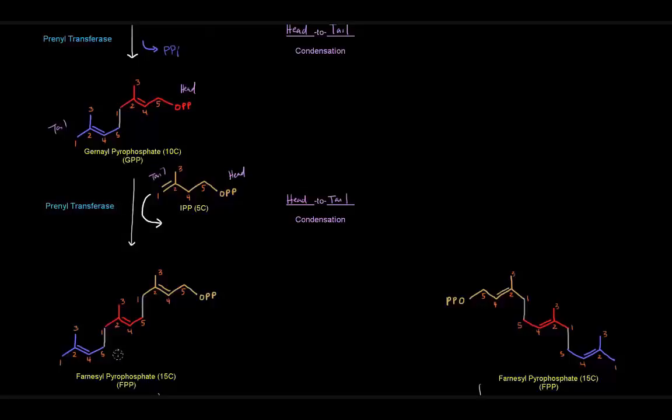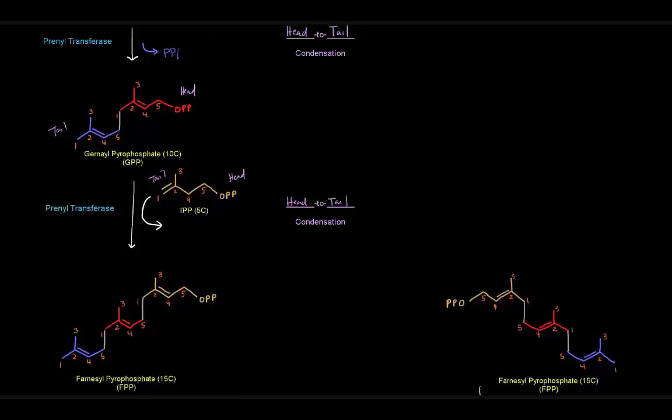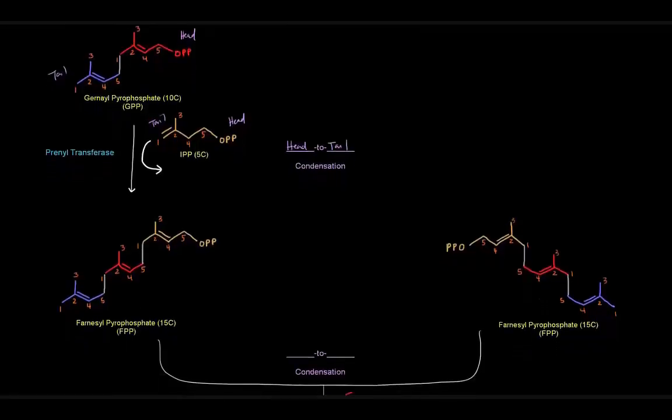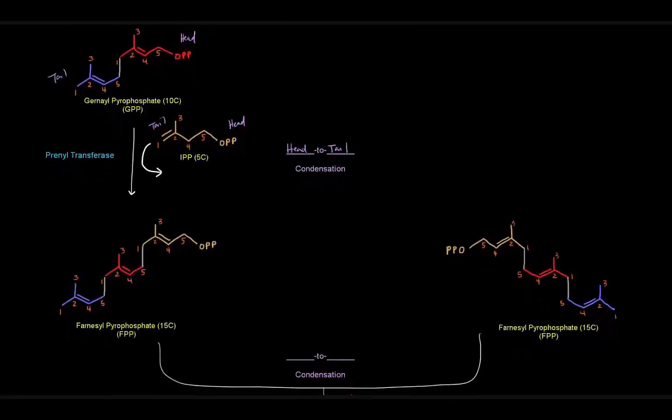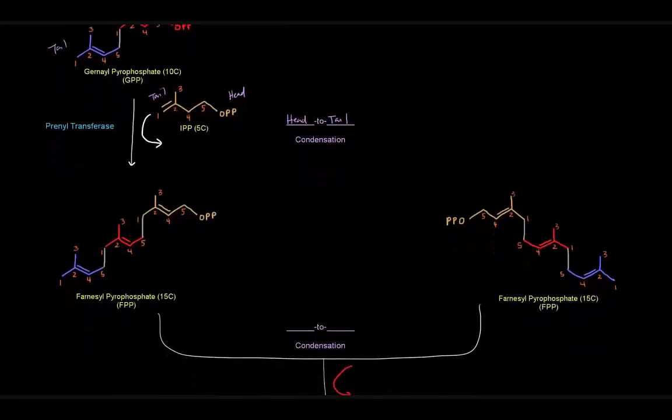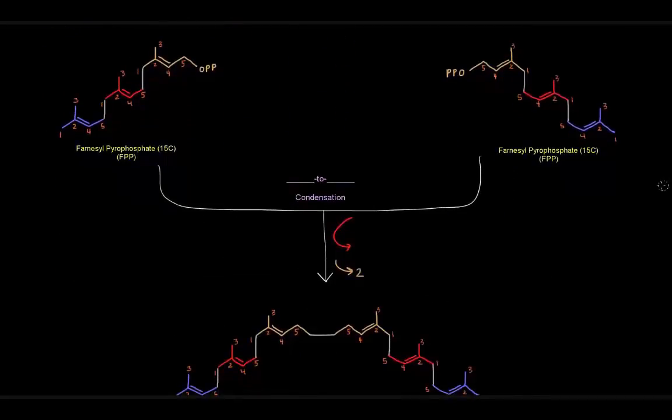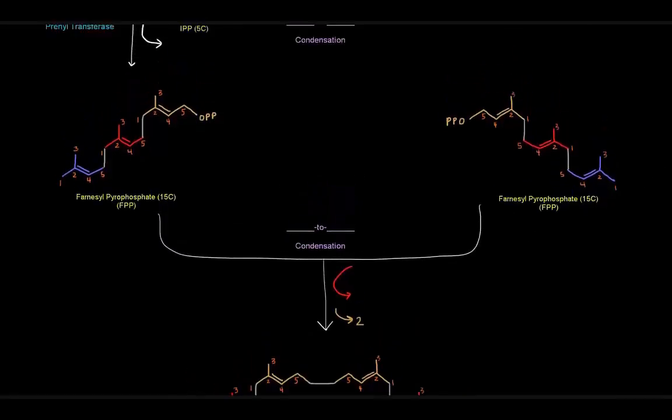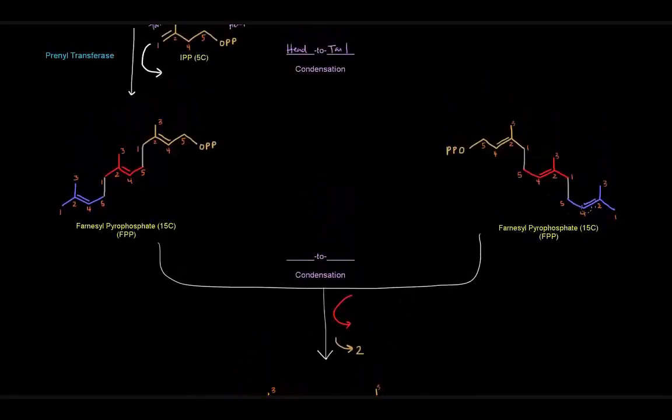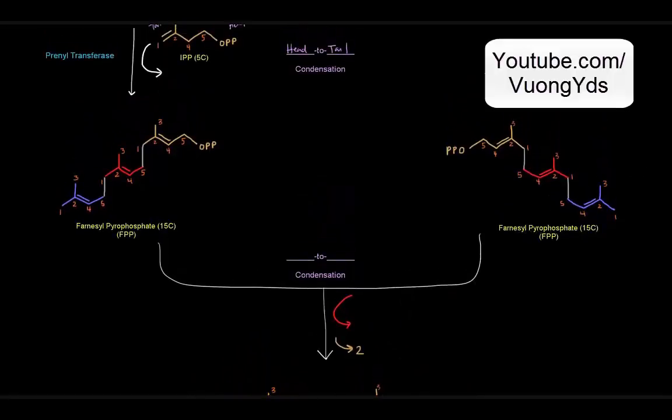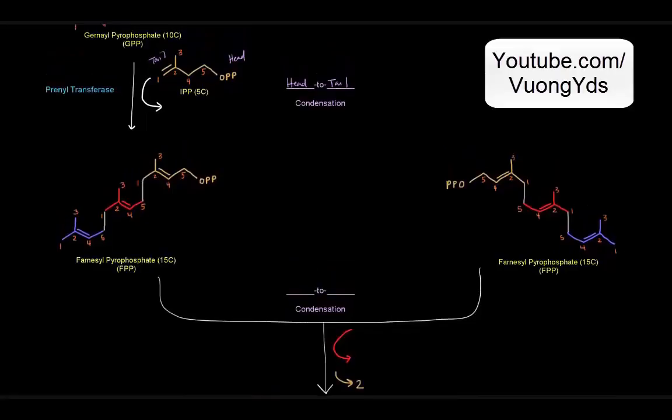Then we have farnesyl pyrophosphate, which is a 15 carbon molecule, and what we're going to do now is take that and another farnesyl pyrophosphate to make squalene, and we're going to link those. But before I get into that, I want to ask: where did this other farnesyl pyrophosphate come from? Well, it came from these same exact steps. We're just going to do all those things again.